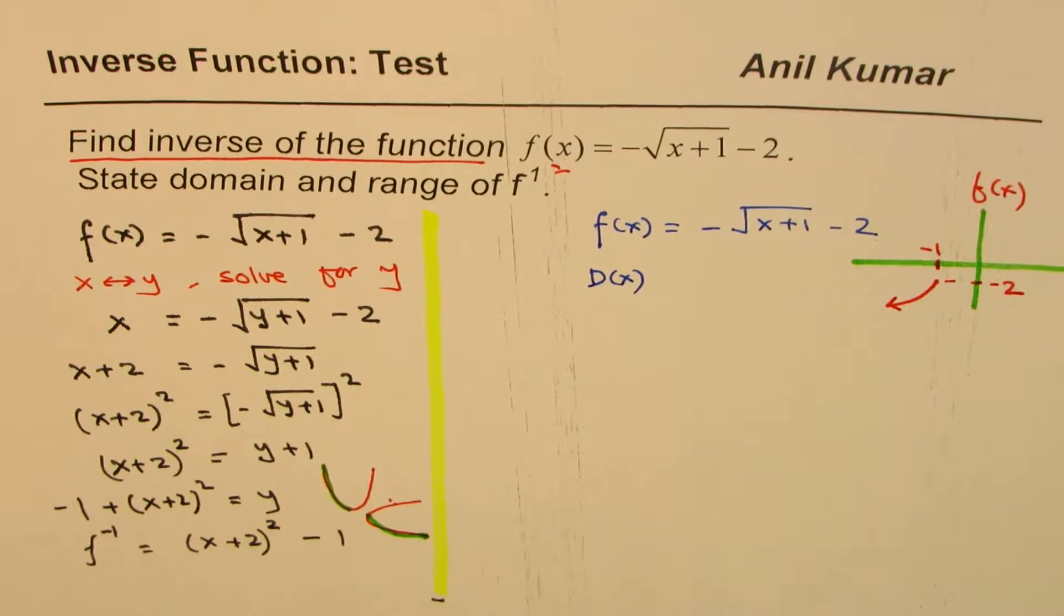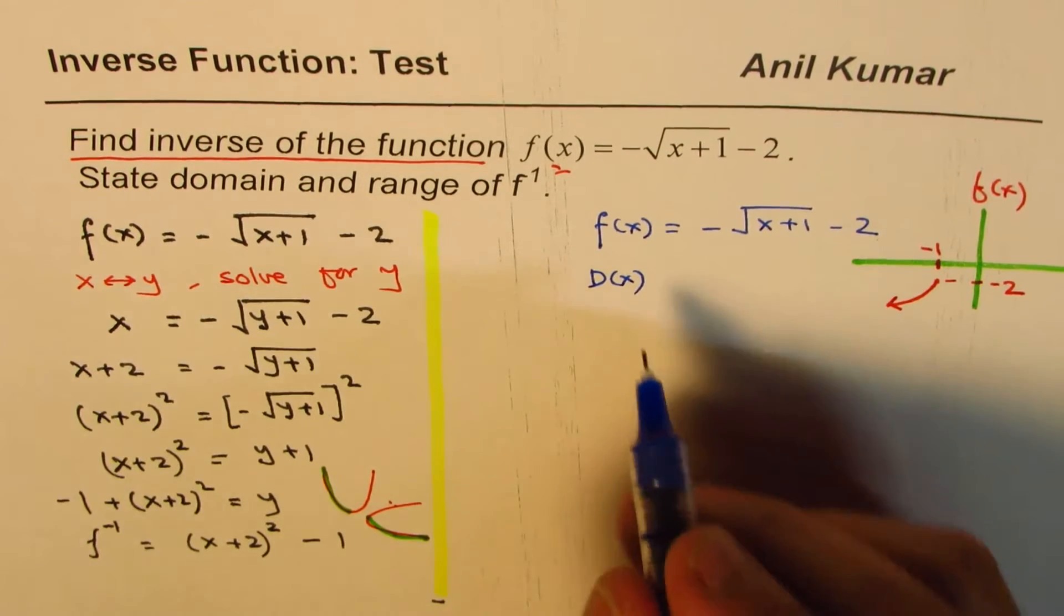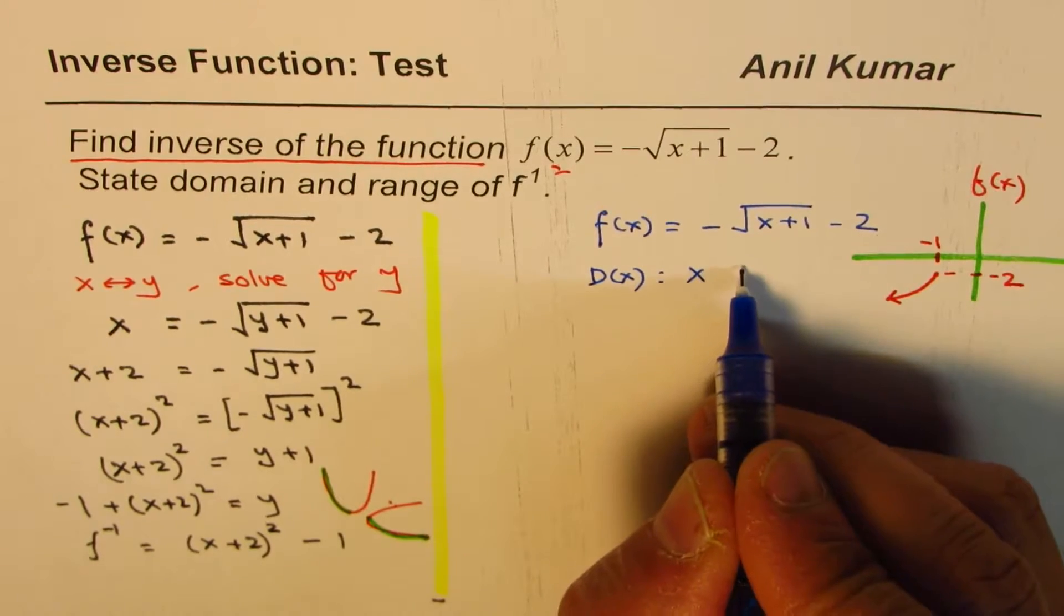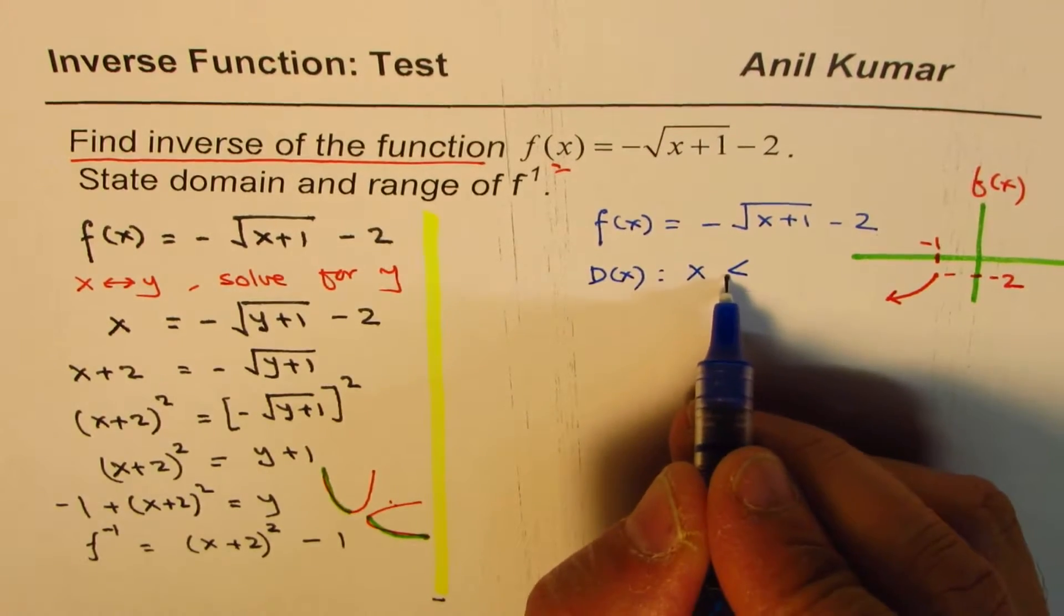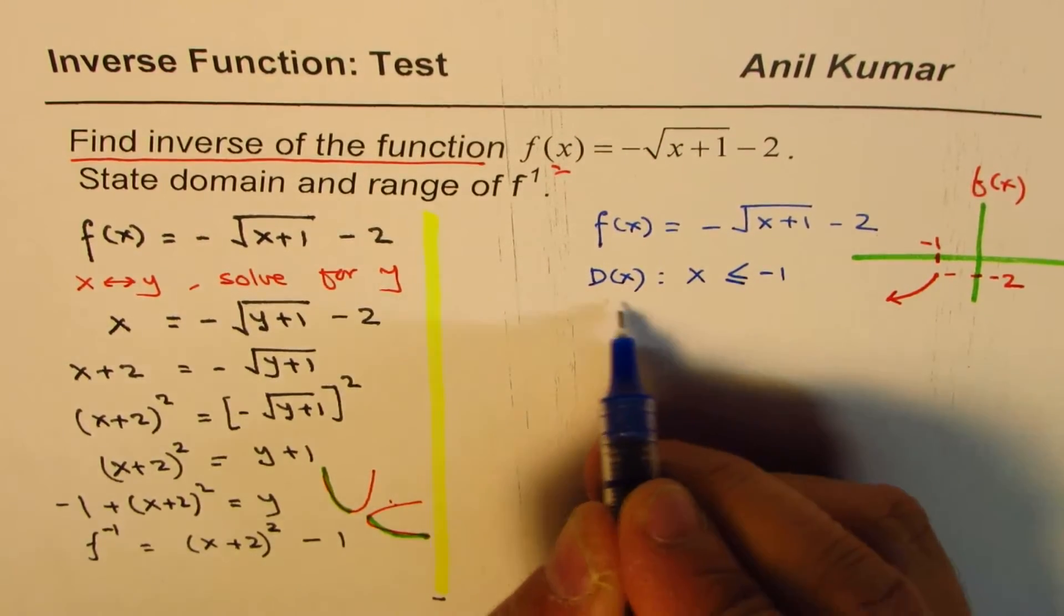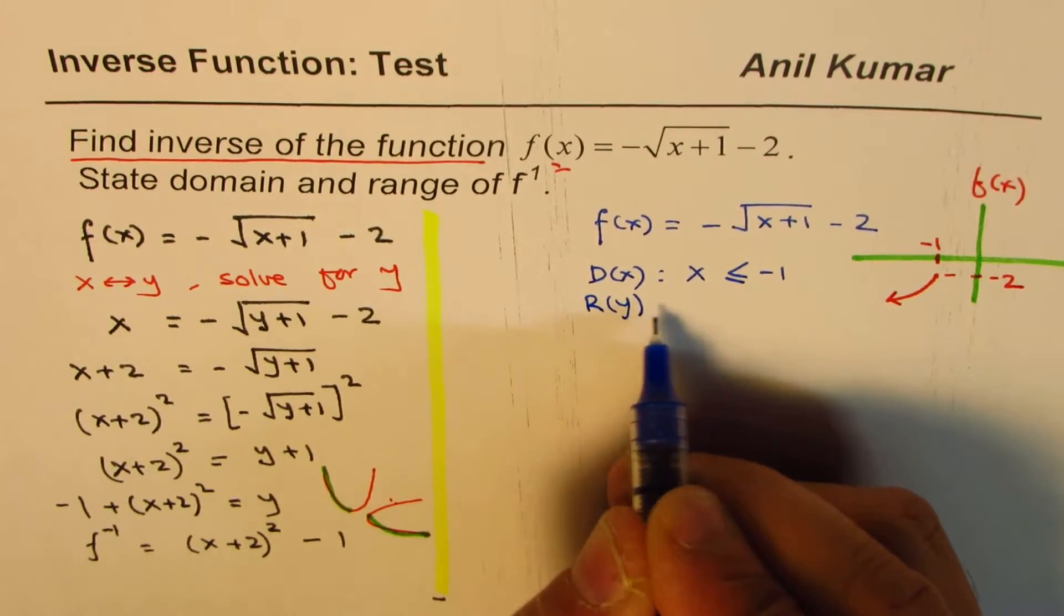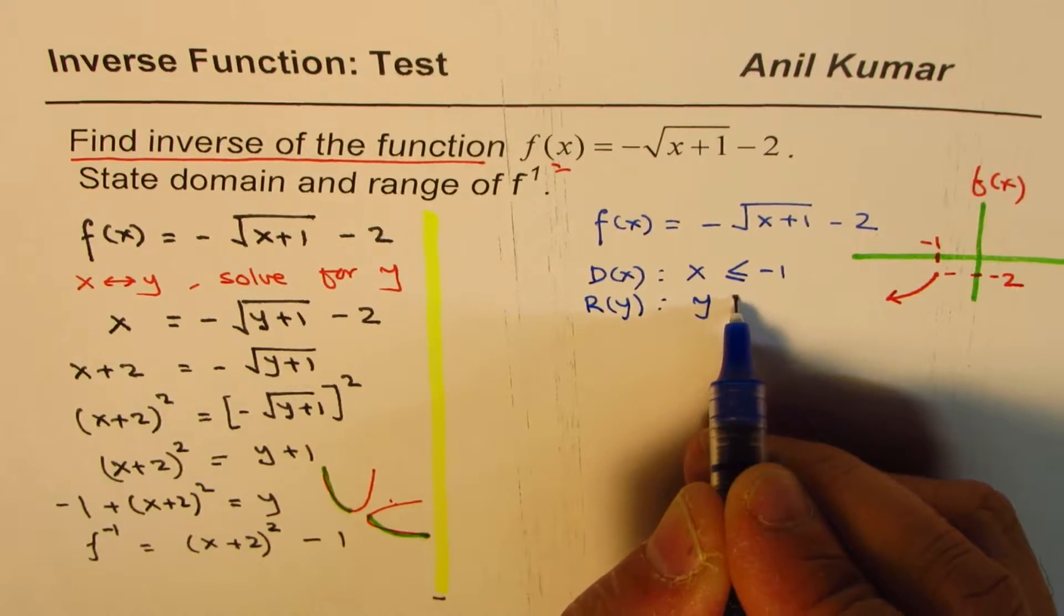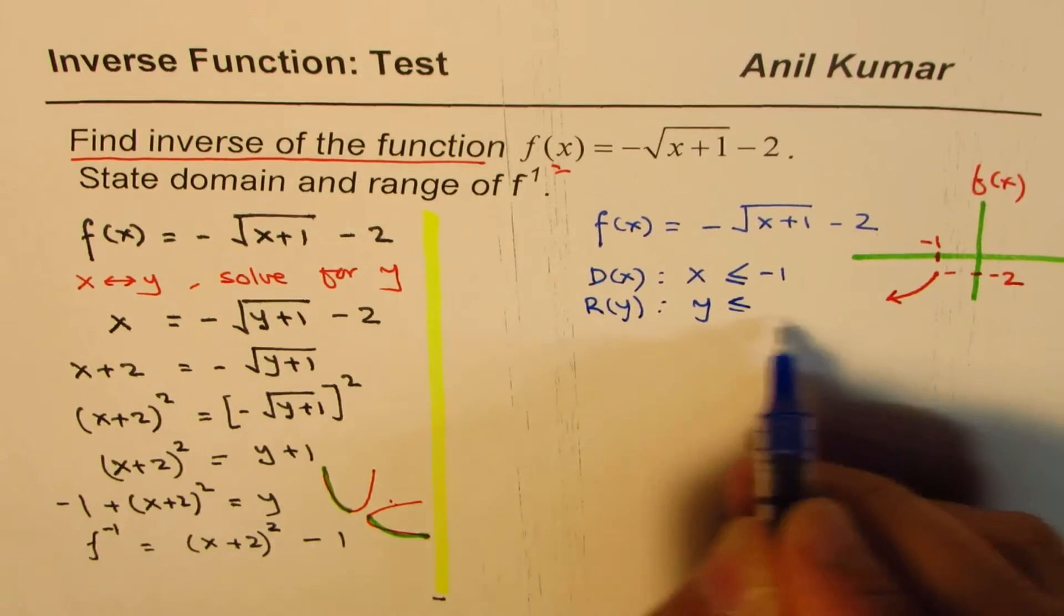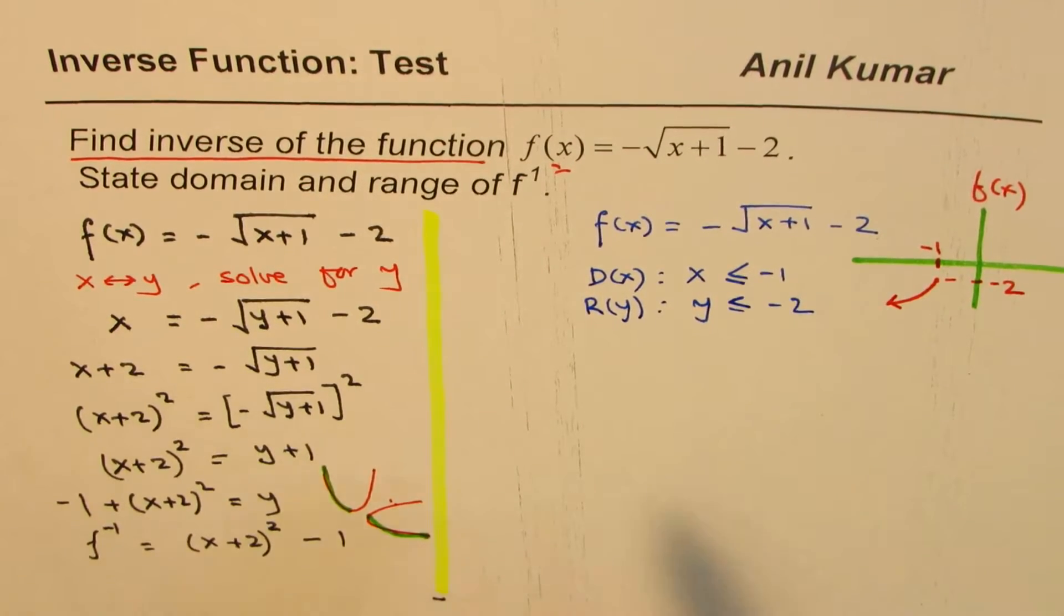And from here, you could write domain of this function as x is less than equal to minus 1. And the range, y is less than equal to minus 2. Is that okay? So that is the detail about the function.